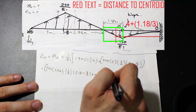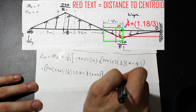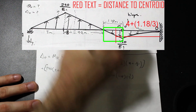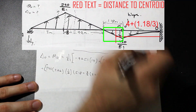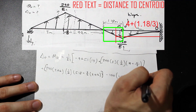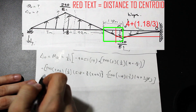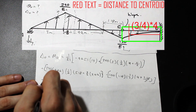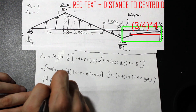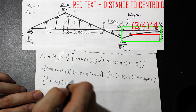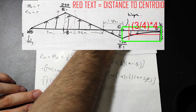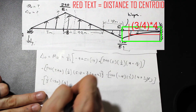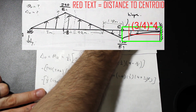Then we have negative 120 times the base times one-half, multiplied by the distance to the centroid: 4 plus one-third of 1.18. Finally, for the parabola, the area is one-third times height times base, and the centroid of a parabola is at three-fourths of the base, giving 3 meters to the centroid.